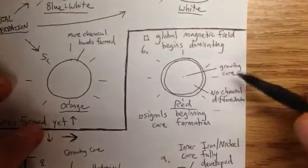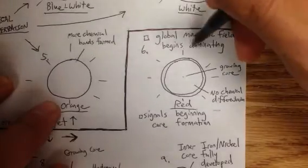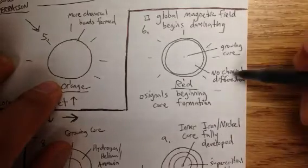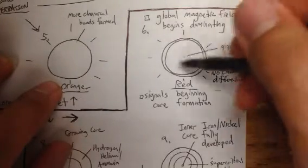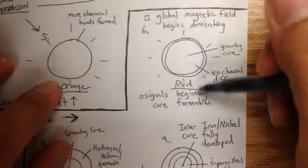In step six here we have the global magnetic field begins dominating all the sunspots. This is a red star. There's still no chemical differentiation in the center, and the core will begin growing. This is when the core begins growing—mind you, it's really, really tiny.